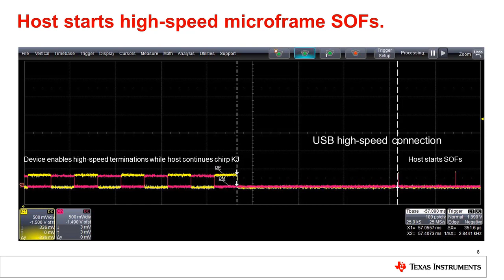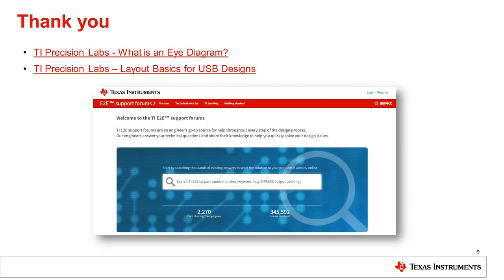In summary, a USB high speed host and a USB high speed device will initially connect at full speed, but transition to high speed mode once the high speed detection handshake is completed successfully. If you have any questions about USB, visit our engineer support forums at e2e.ti.com and look for us in the interface section. If you want more information on eye diagrams and what can impact USB eye diagrams, please check out other presentations in our TIPL series.